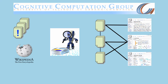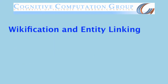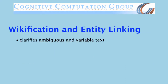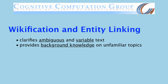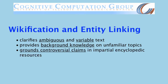In doing so, the Wikifier can assist human readers in automated systems in three key ways: by resolving entities and clarifying ambiguous and variable text, by providing background knowledge about unfamiliar topics, and by grounding controversial claims from partisan sources in impartial encyclopedic resources.